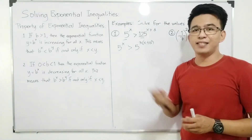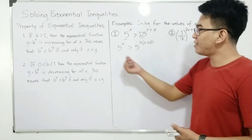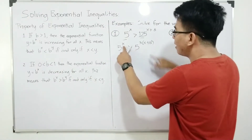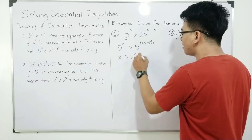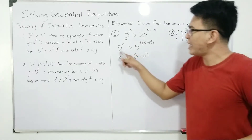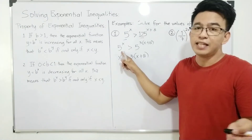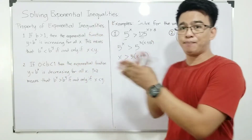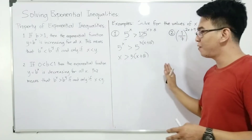Since the bases are the same, we copy the exponents. We have x is greater than 3 times (x plus 8). Now, is 5 greater than 1? Yes. Therefore, we use property 1 — we do not flip the inequality symbol. The greater than symbol stays as is, and we solve for this.